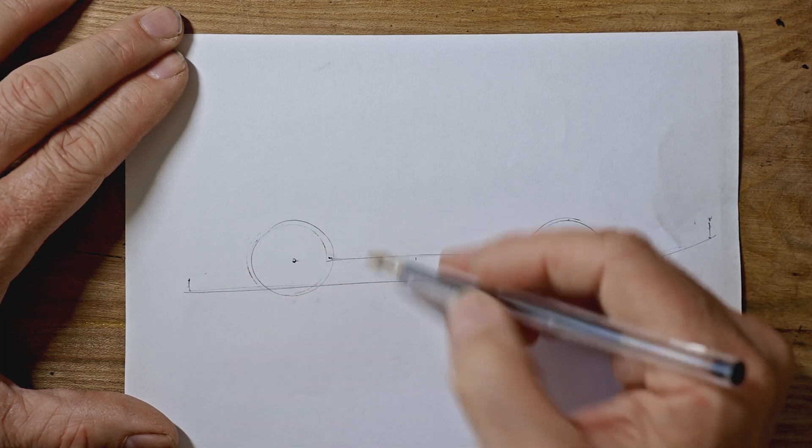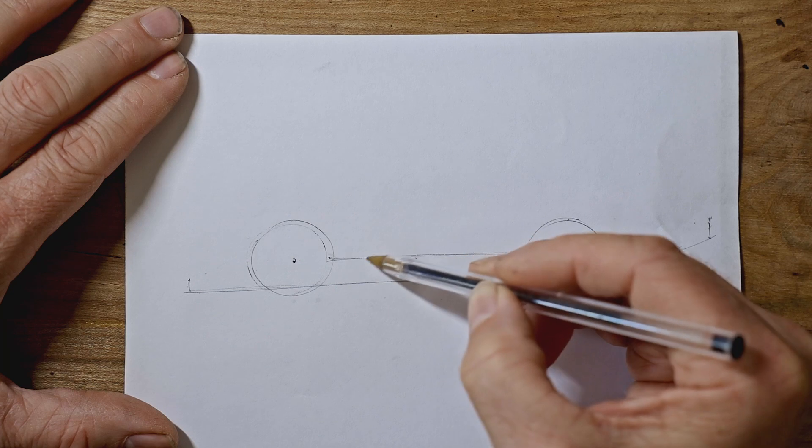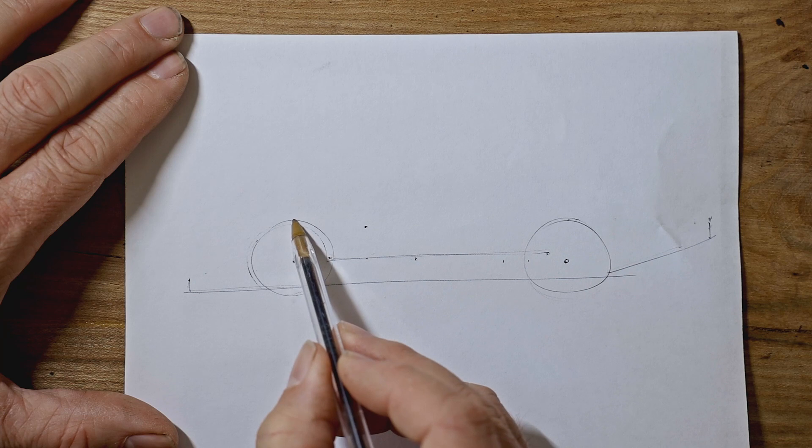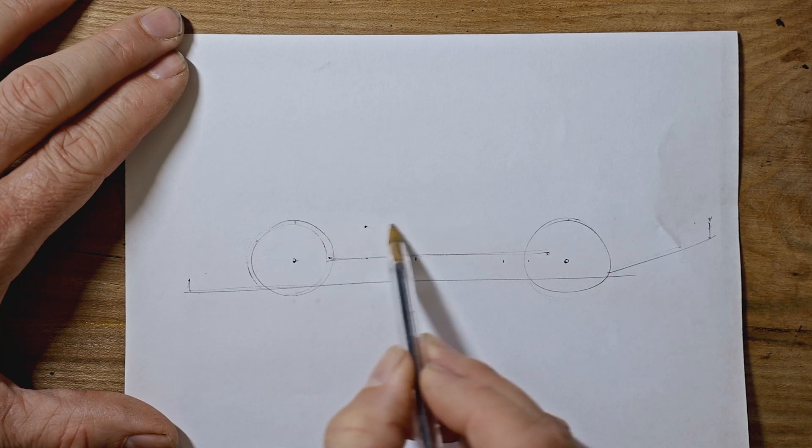We'll make it a bit easier by giving ourselves some marks. So if you measure half a wheel further back after this front wheel, make a little mark level with the top edge of your front wheel. That's going to be the low point.